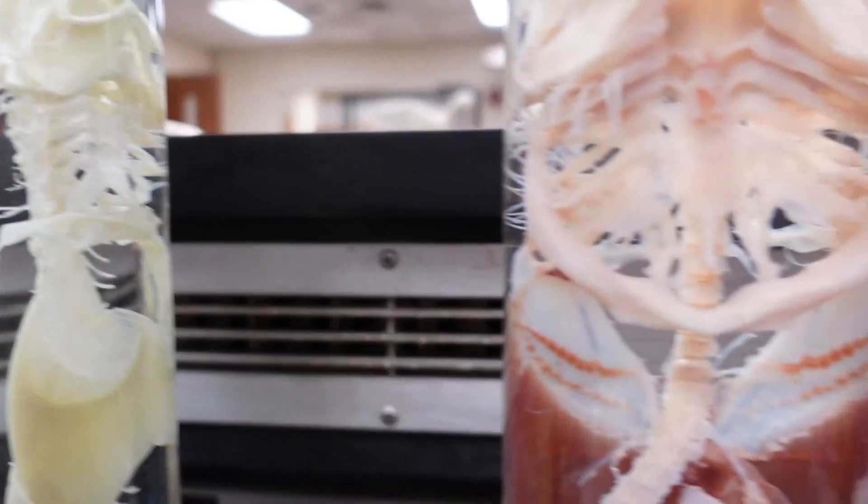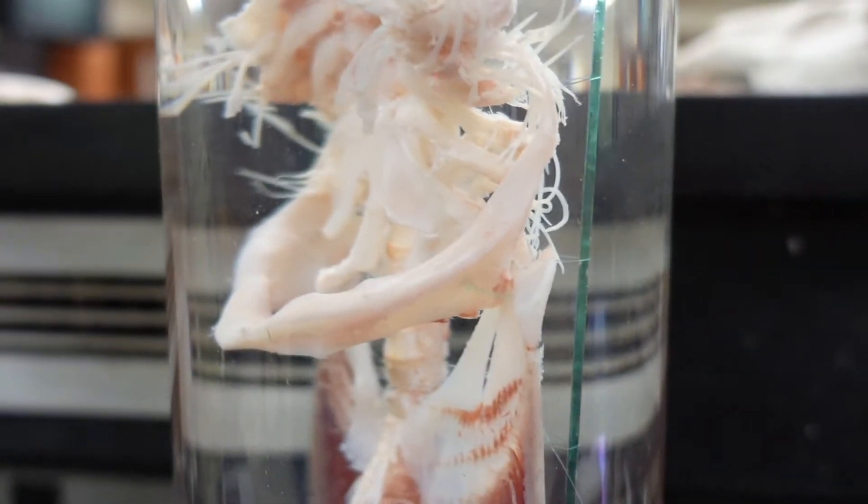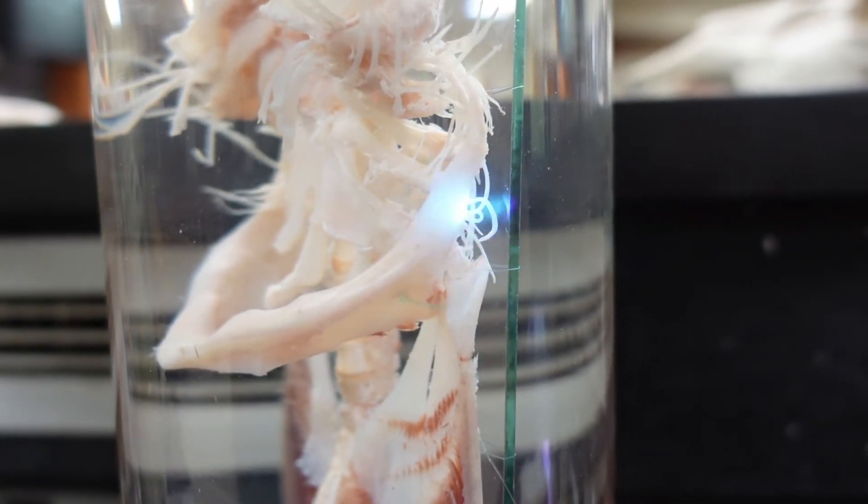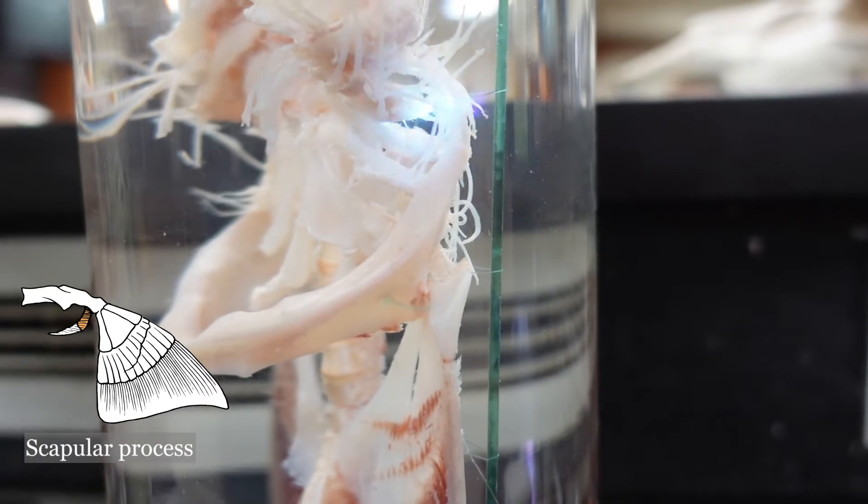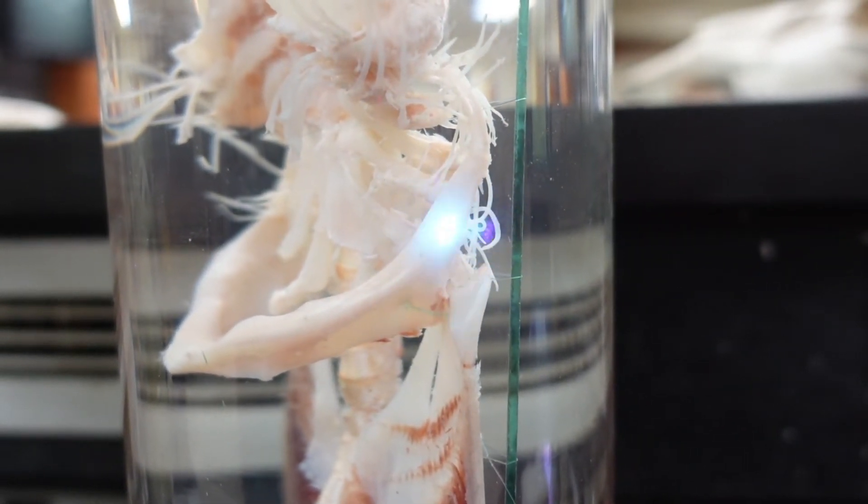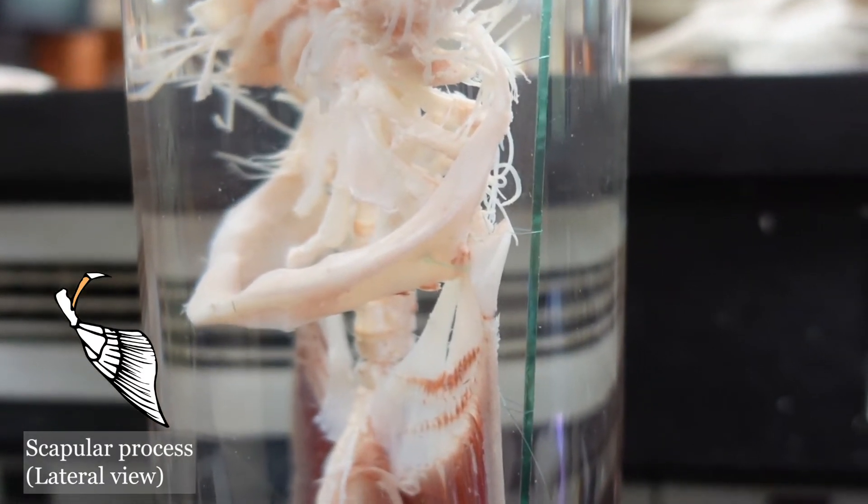Back to the larger shark. Leading up to the scapular cartilage from the coracoid bar is the scapular process. That is what actually articulates with the scapular cartilage. Make sure to make the distinction between those two because they are different structures.